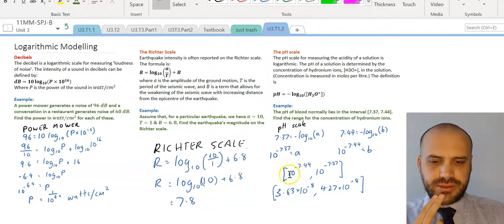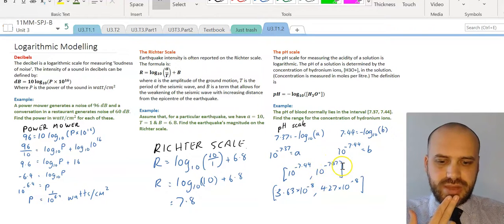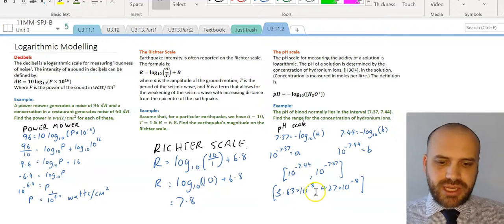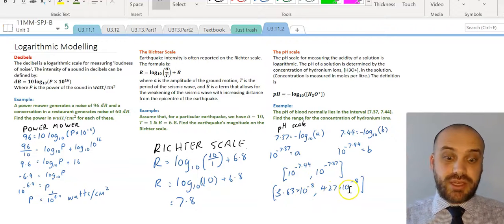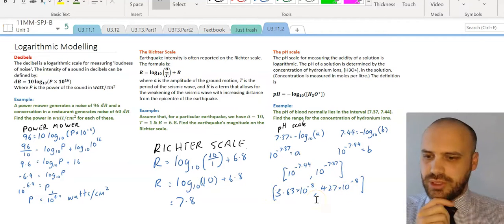I get two answers, 10 to the negative 7.44 and 10 to the negative 7.37, which you can write as 3.63 times 10 to the negative 8 and 4.27 times 10 to the negative 8. Your calculator will spit out those numbers for you in scientific notation if you want it.